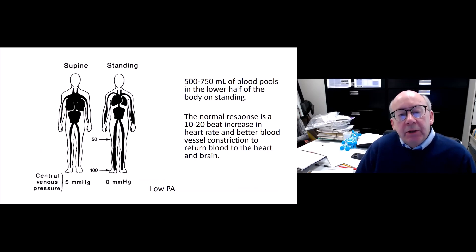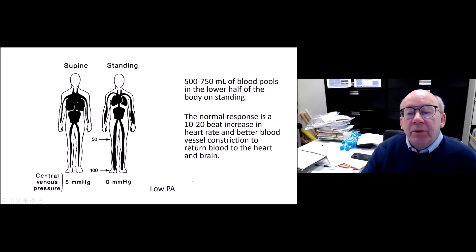The big challenge when we stand up is that about 500 to 750 milliliters of blood pools in the lower half of the body. This is a diagram from Philip Lowe's clinical autonomic textbook showing dilation of the veins in the legs. The diagram isn't as good for showing the amount of blood that pools in the abdominal cavity, but a fair amount does. And as a result, you've got less blood coming back to the heart and less to pump up to the brain. The normal response to this is for the heart rate to increase by about 10 or 20 beats and for blood vessels in the legs to constrict to push that blood back up to the chest and the brain.